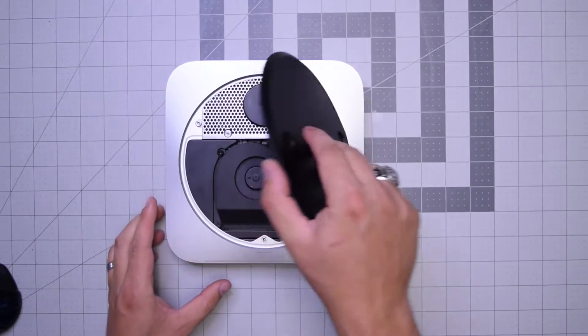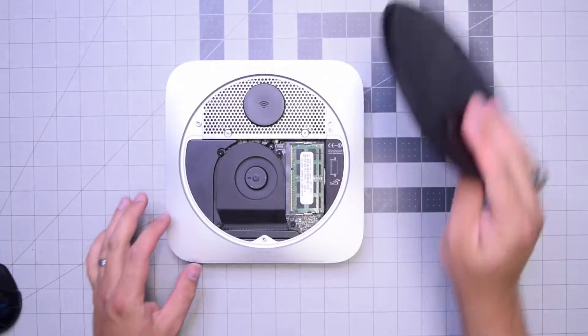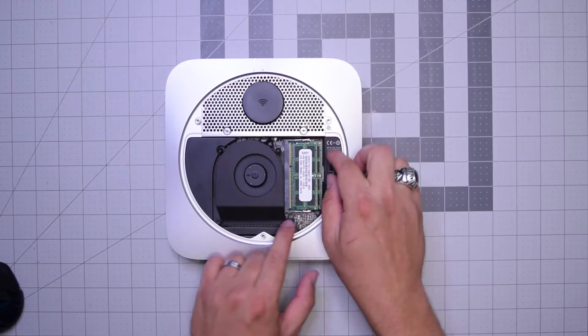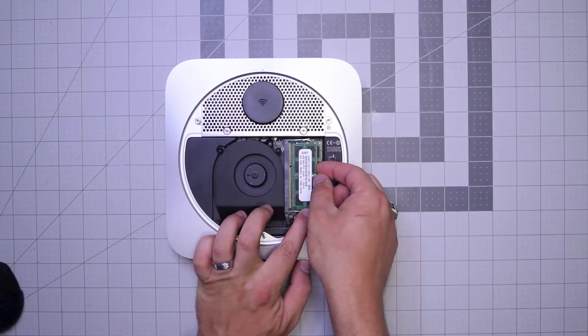Now we have access to the inner parts of the Mac Mini. With your fingers, push the metal clips outwards until the memory chip starts popping up.